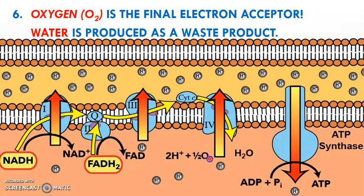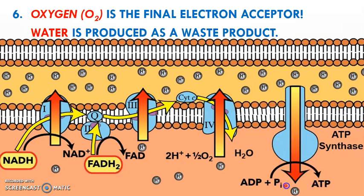The electrons bind to oxygen, which becomes negatively charged and attracts positively charged hydrogen ions, producing water as a waste product. Your cells could use this water, but for this process it is a waste product not directly needed for the reaction to continue. Following the electron flow creates the gradient, and then the hydrogen ions flow back into the matrix from high to low through ATP synthase — causing it to spin like a turbine and generate ATP by adding a phosphate group back onto ADP.